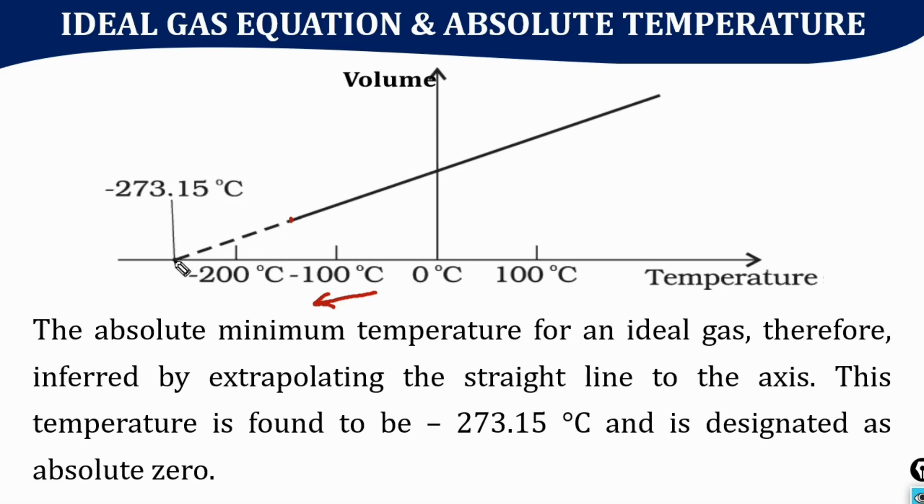This will cut the x-axis at a certain point. On the same graph, this value is found to be equal to minus 273.15 degrees Celsius. This is the absolute minimum temperature for an ideal gas.